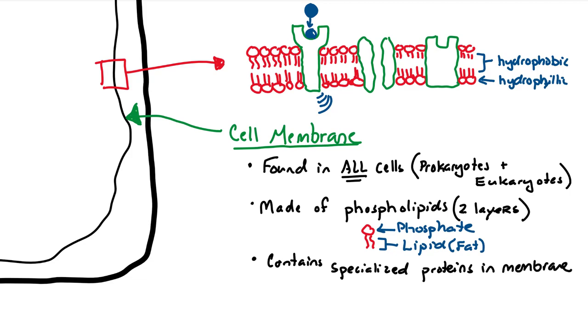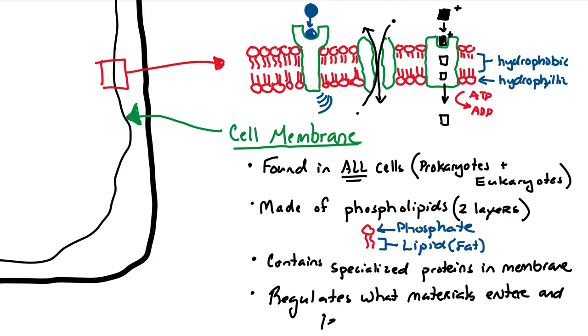These specialized proteins, they allow cellular messages to be transmitted. They allow certain materials to go in and out. And even tough material, things that are charged, like ions, it allows that material to go in. It may require the use of energy, but nonetheless, the cell membrane allows things to go into and out of the cell. Therefore, the cell membrane regulates what materials enter and leave.